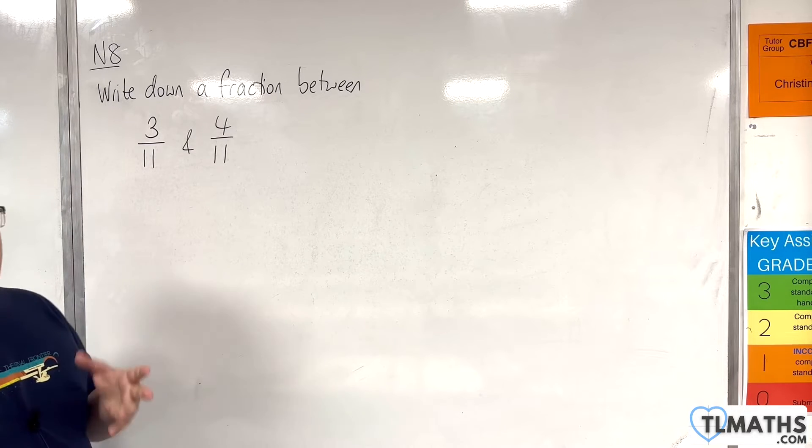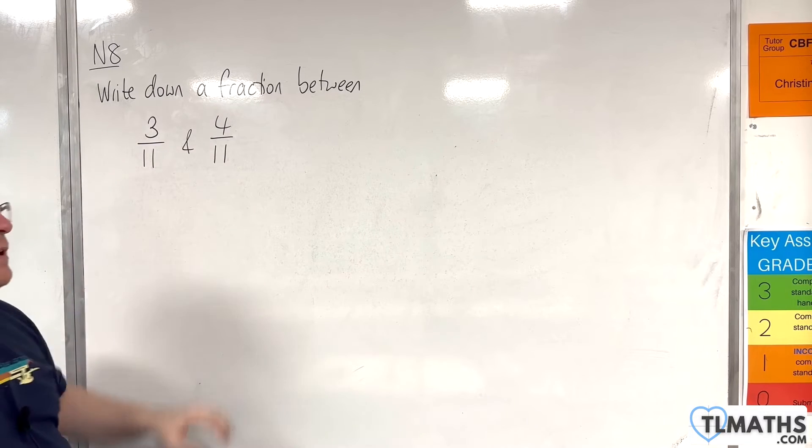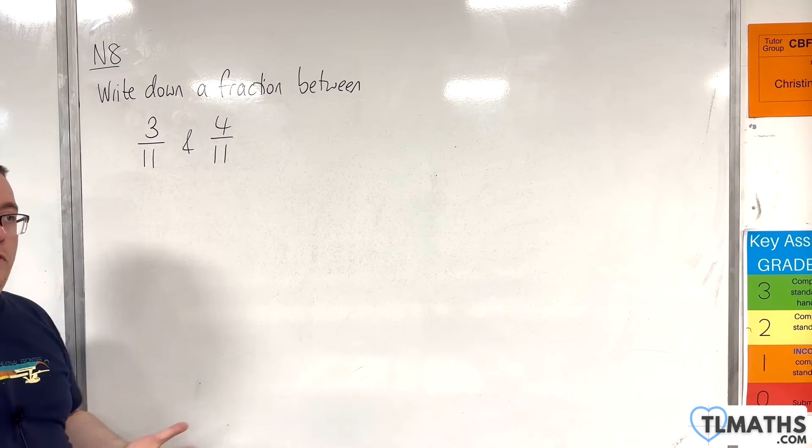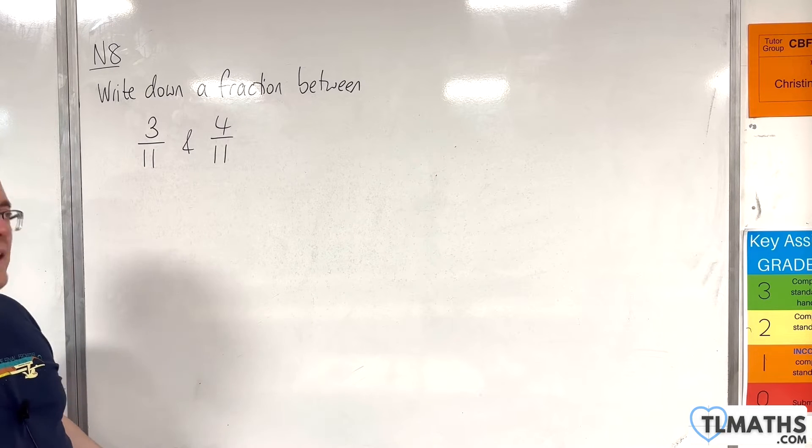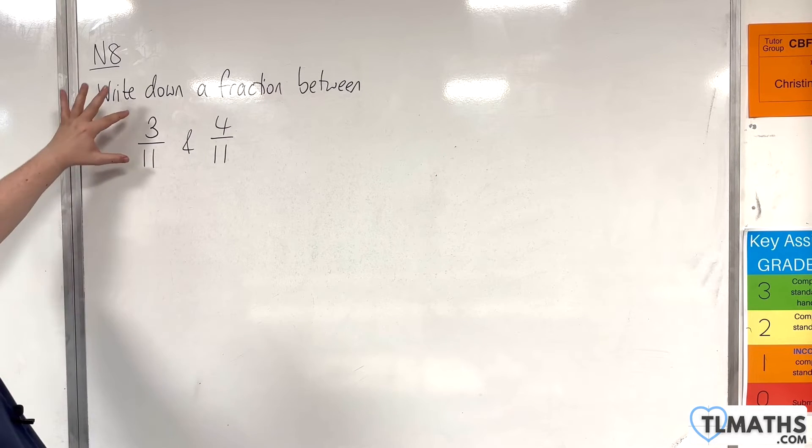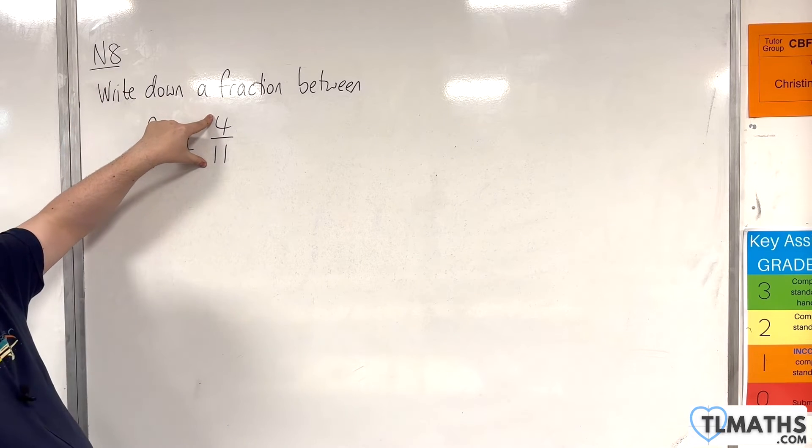What I'm going to do is I'm going to multiply both of these fractions, top and bottom. So, I'm going to get an equivalent fraction for both of them, and I'm going to multiply them by the same value. Let's say we multiply top and bottom by 2 here, and multiply top and bottom by 2 here.